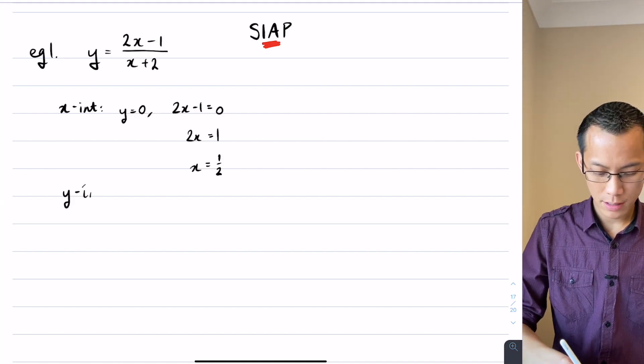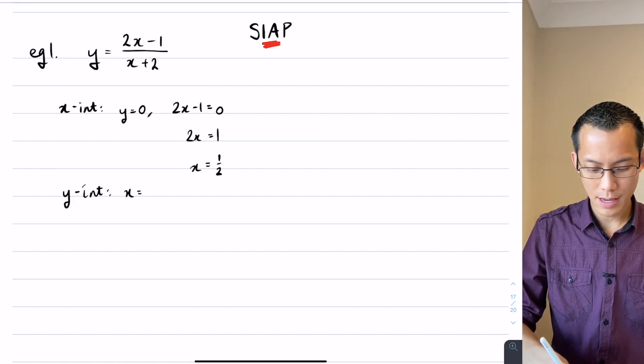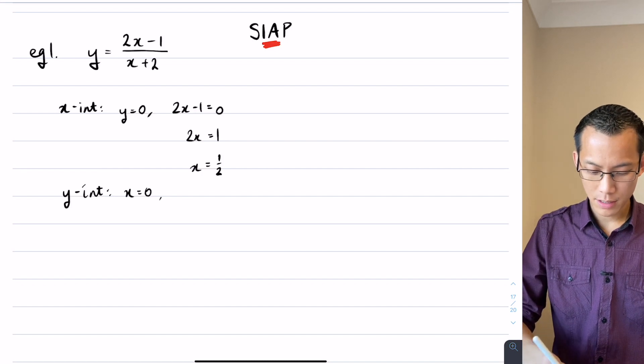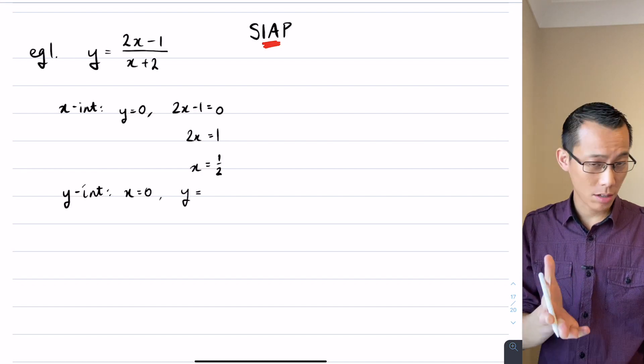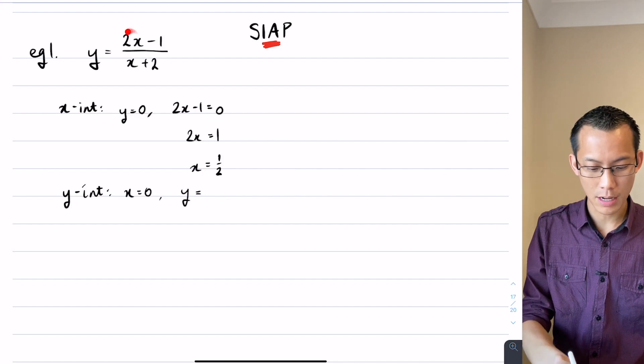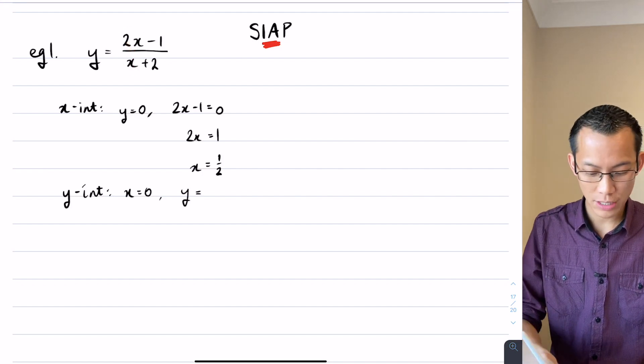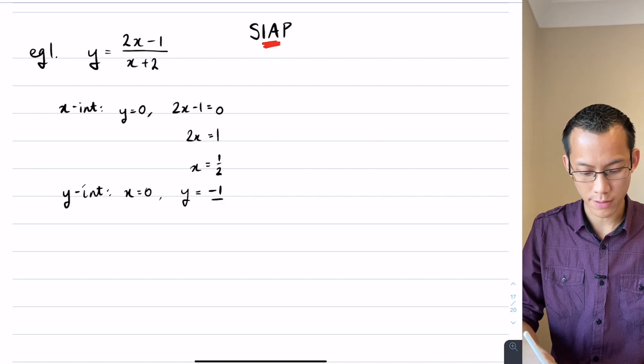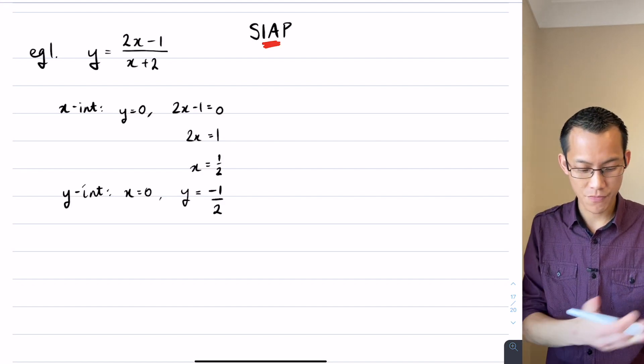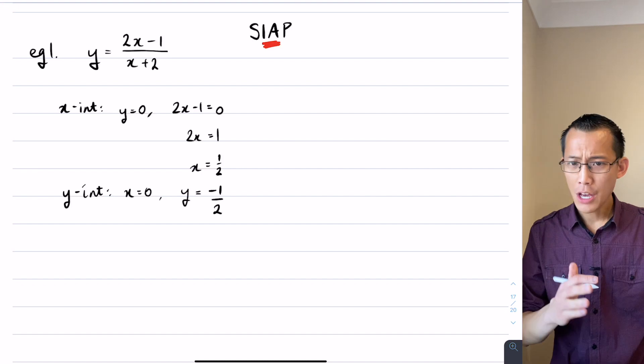Same idea with the y-intercept. I'm going to let x equal 0. So in this case I get y equals, all my x-terms are going to disappear, so this guy here vanishes away, this guy here vanishes away, and you just get left with minus 1 over 2. Done. There are my intercepts. So intercepts, check.